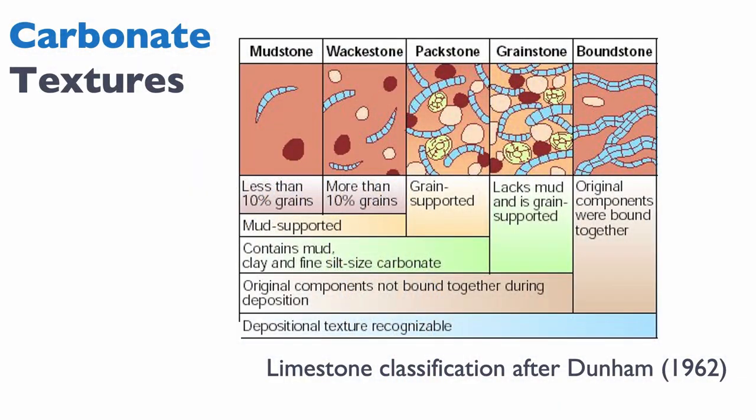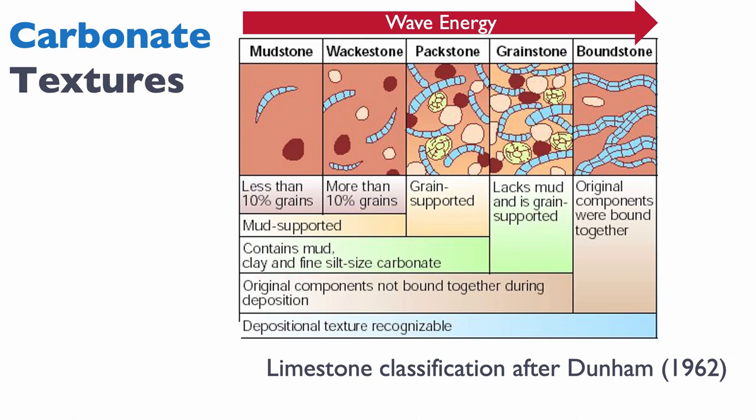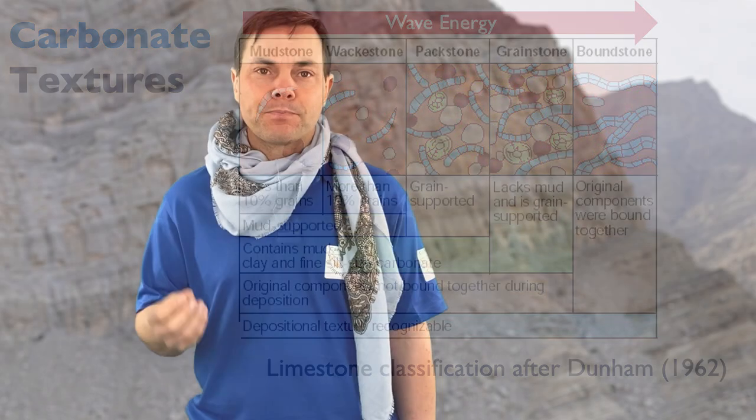What's interesting about this classification is that it is a direct indication of wave energy. On the left you have the mudstone, and on the right you have the grainstone to boundstone. Moving right, we are removing more and more of the finer matrix and concentrating the grains, all the way to the boundstone that can withstand high wave energy. A boundstone can also form in low wave energy, so be careful — but the beauty and power of the Dunham classification is really that you can relate it to wave energy.